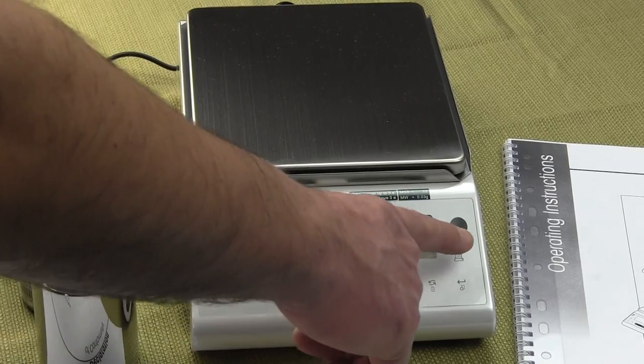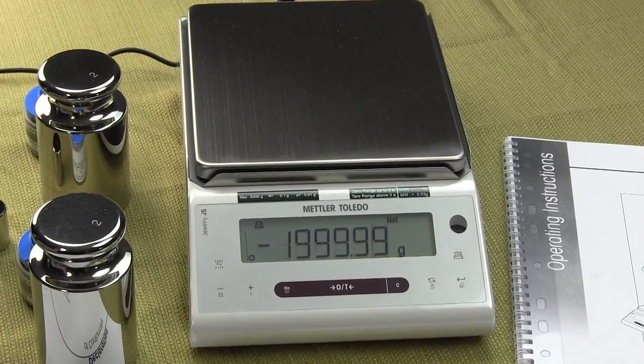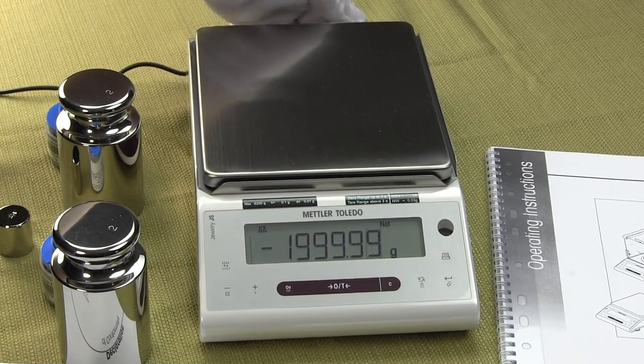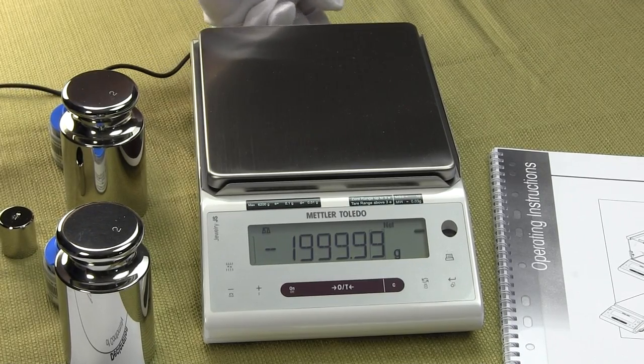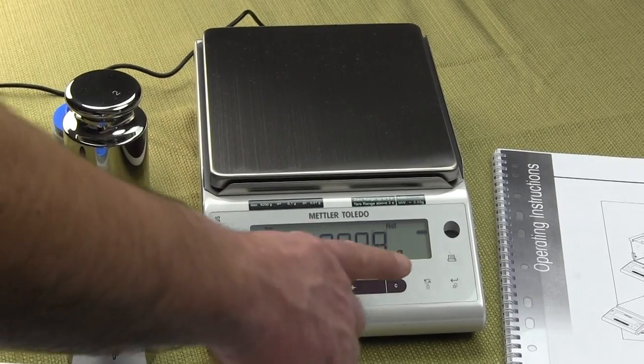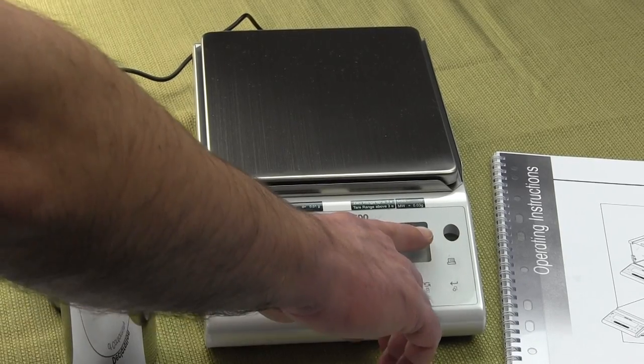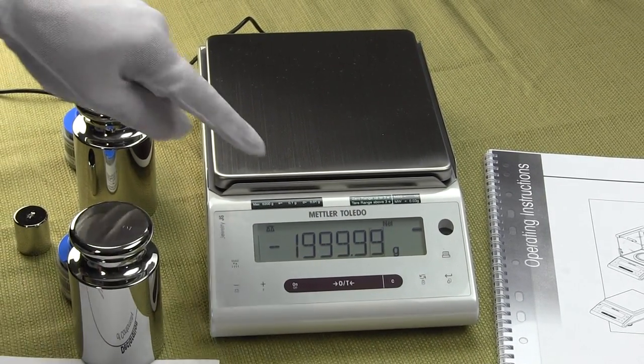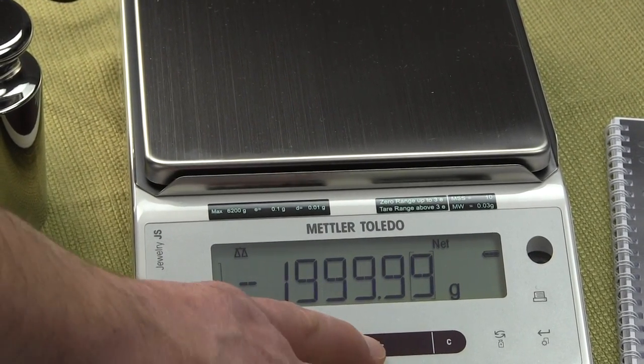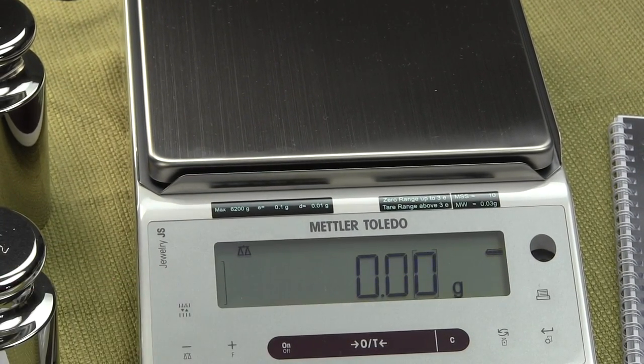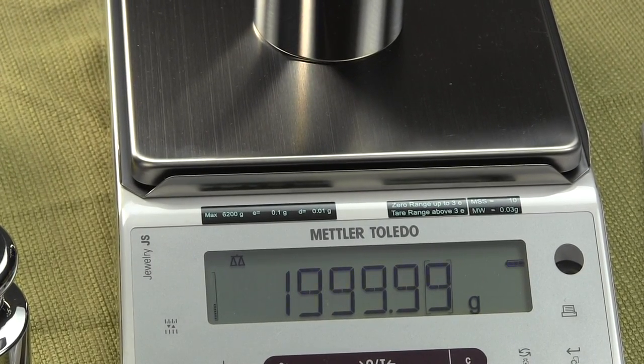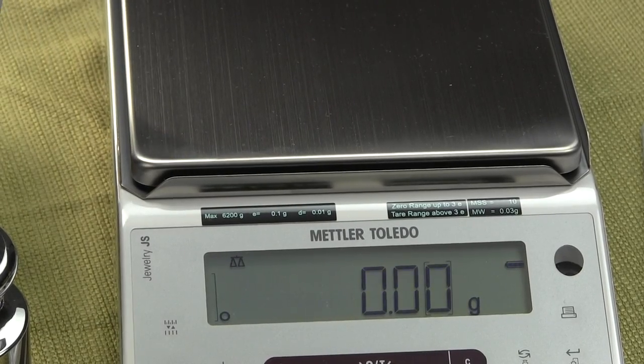Some more features about the balance, you have a spirit bubble indicator on the balance so that you can level the balance each time. Now the unique thing about this balance, if I unplug it, notice the balance never went off. That's because these new Mettlers can be operated off of regular batteries. This over here is showing you that it's under battery power right now. You can see the balance performs great either under AC adapter or battery power.